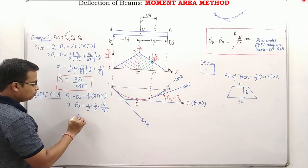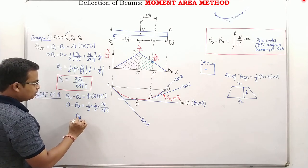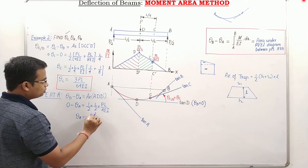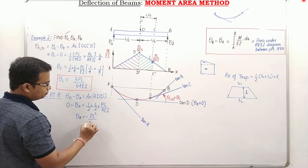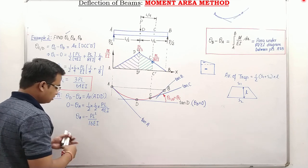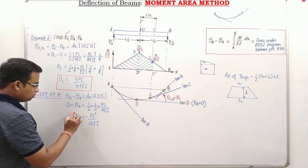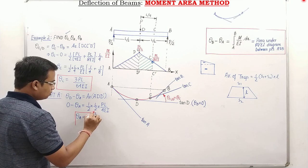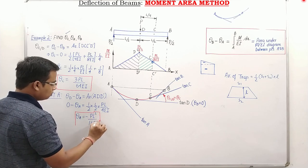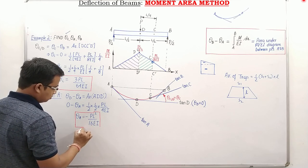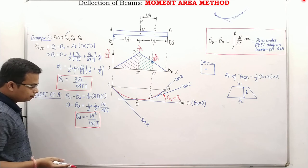Theta_A = −PL²/(16EI). This is a very important result.